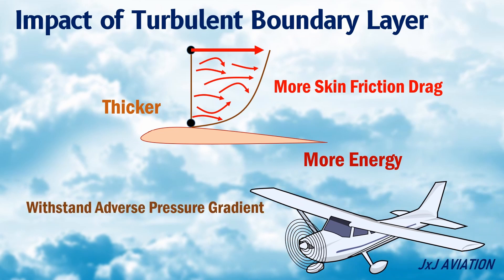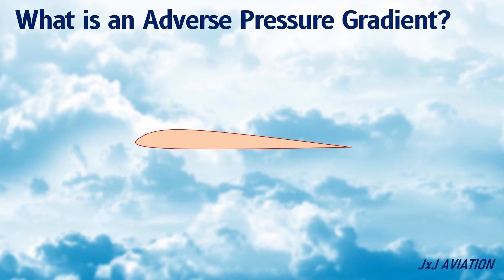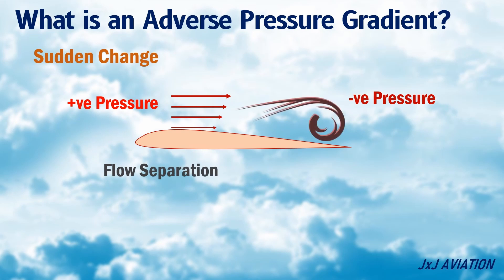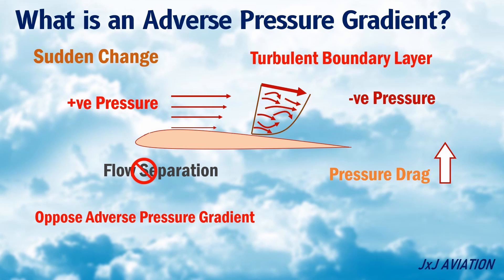An adverse pressure gradient disrupts the flow across a wing or any body moving across a fluid. What is an adverse pressure gradient? An adverse pressure gradient is a sudden change from positive pressure to negative pressure. This will result in flow separation over the surface and consequently an increase in the pressure drag. A turbulent boundary layer will oppose the adverse pressure gradient and prevents the flow from separating over the surface. A turbulent boundary layer may be forcefully induced on a surface in order to prevent the flow from separating and thus reducing the drag.